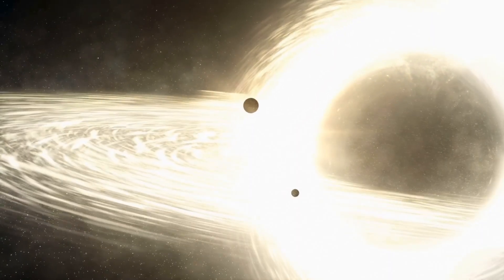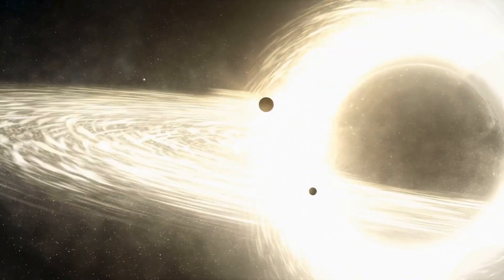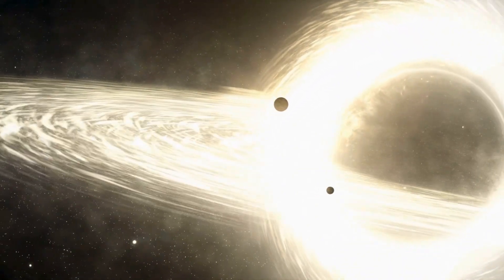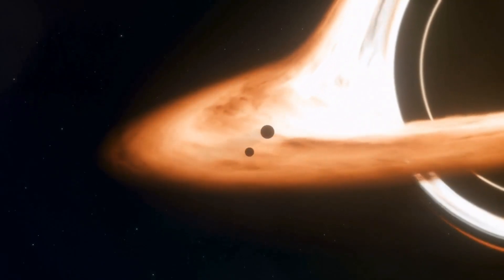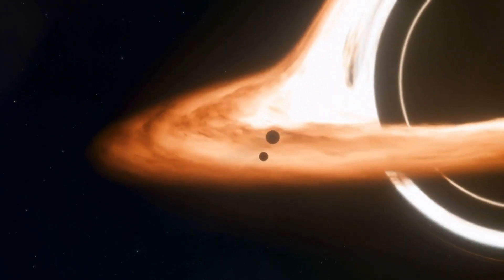black holes behave like any massive object. Stars, planets, and even entire solar systems can orbit them safely as long as they don't get too close. But what happens if something does cross the event horizon? That's where things get wild.